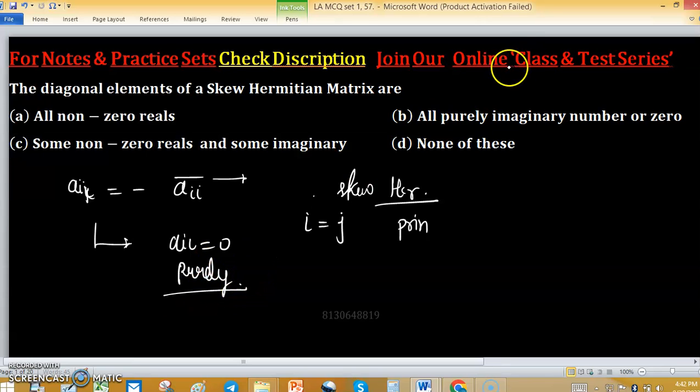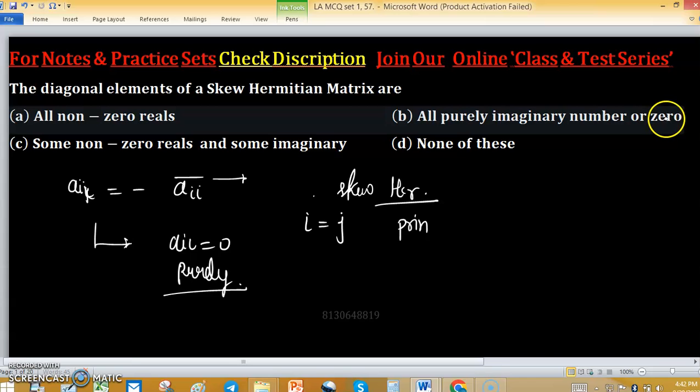Diagonal elements are all purely imaginary numbers or zero. This is not exactly true - it is the combination, some non-zero. Actually, let's come to the questions.